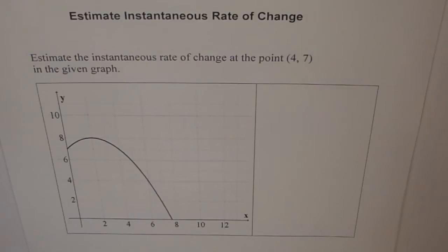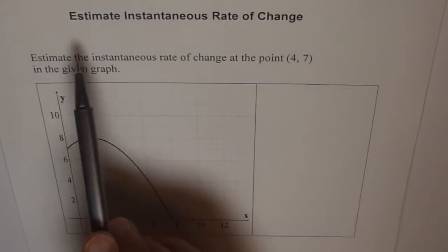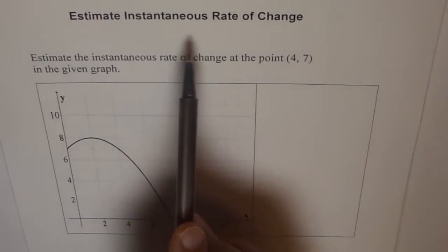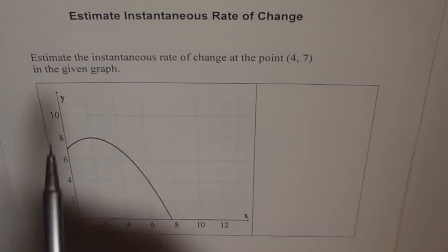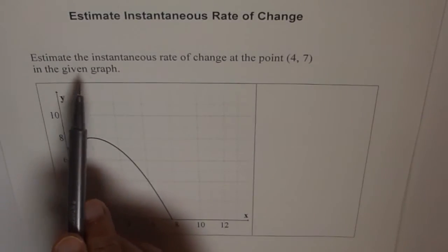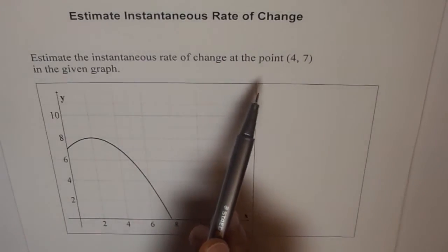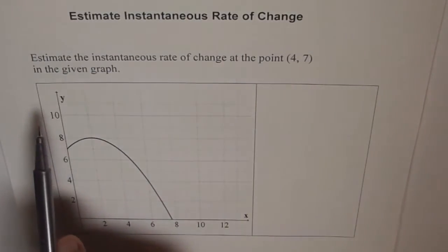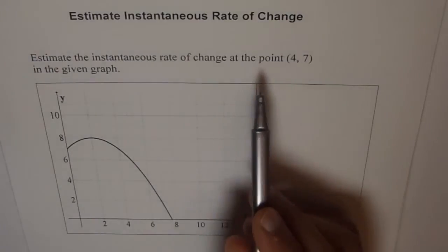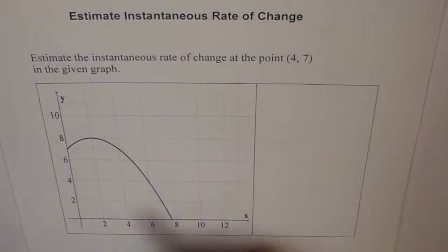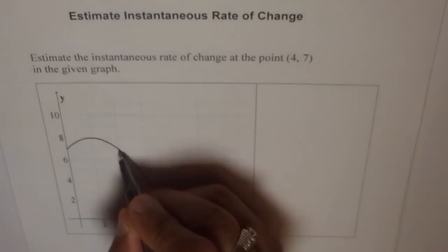Look into this sheet. It says estimate instantaneous rate of change. We are given a graph here and the problem before us is estimate the instantaneous rate of change at the point (4,7) in the given graph. So this is a graph given to us and we need to estimate instantaneous rate of change at the point (4,7). So where is (4,7)? 4 and 7 is that point.